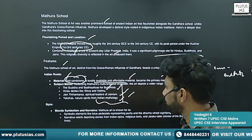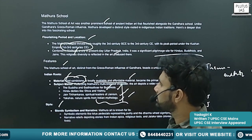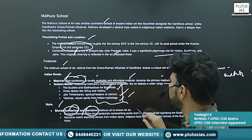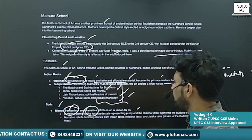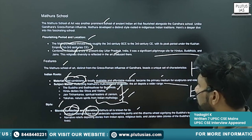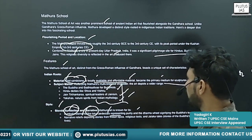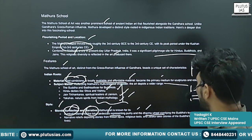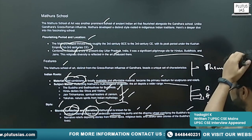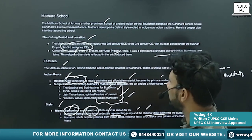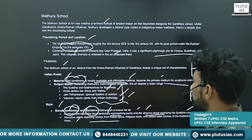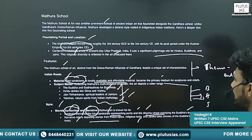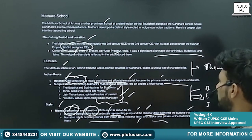If you see the style, you will see a blend of symbolism and narrative in the Mathura School of Art. Symbolic elements like lotus pedestals representing purity and dharma wheels signifying Buddha's teachings will be there. Narrative reliefs depicting stories from Indian epics, religious texts, and Jataka tales are also present.